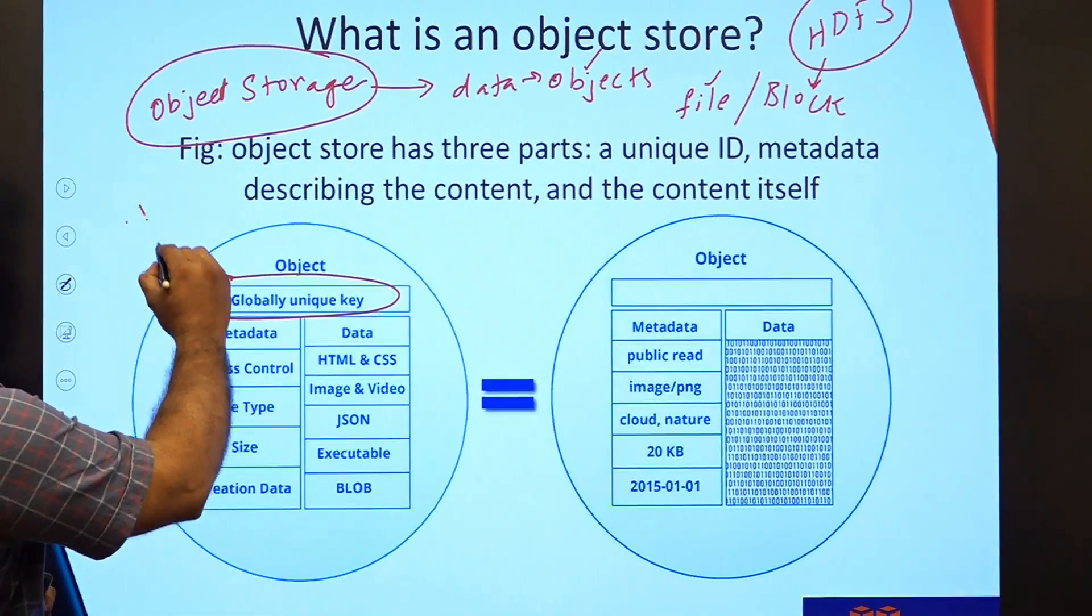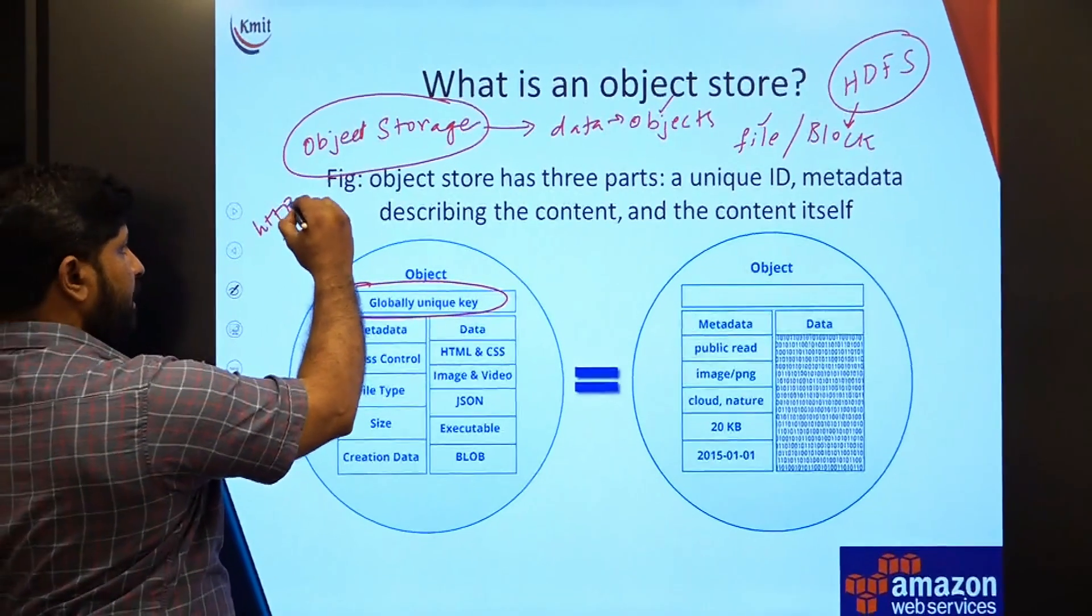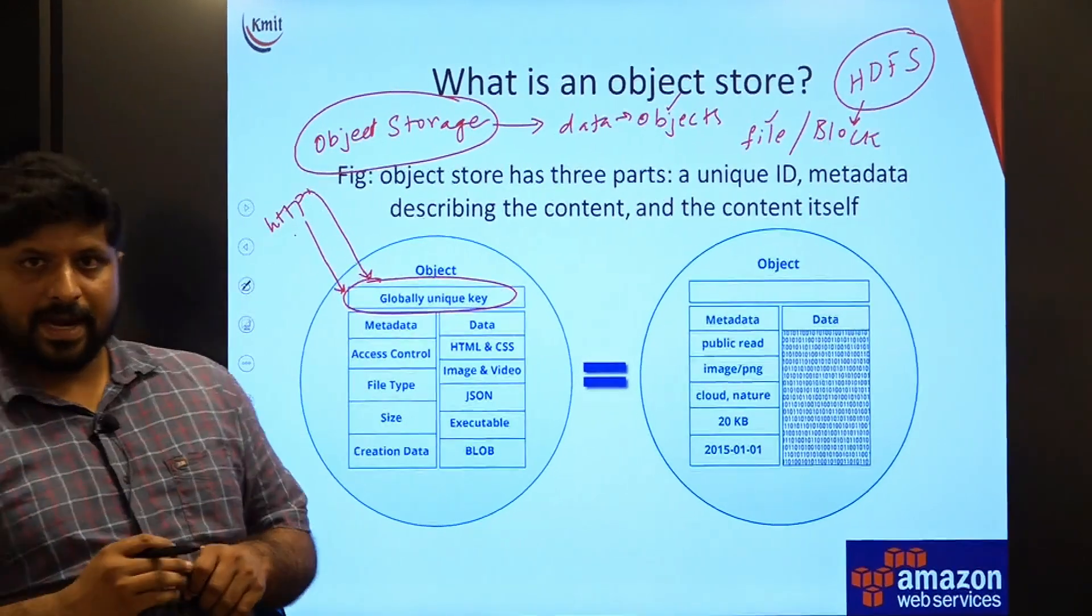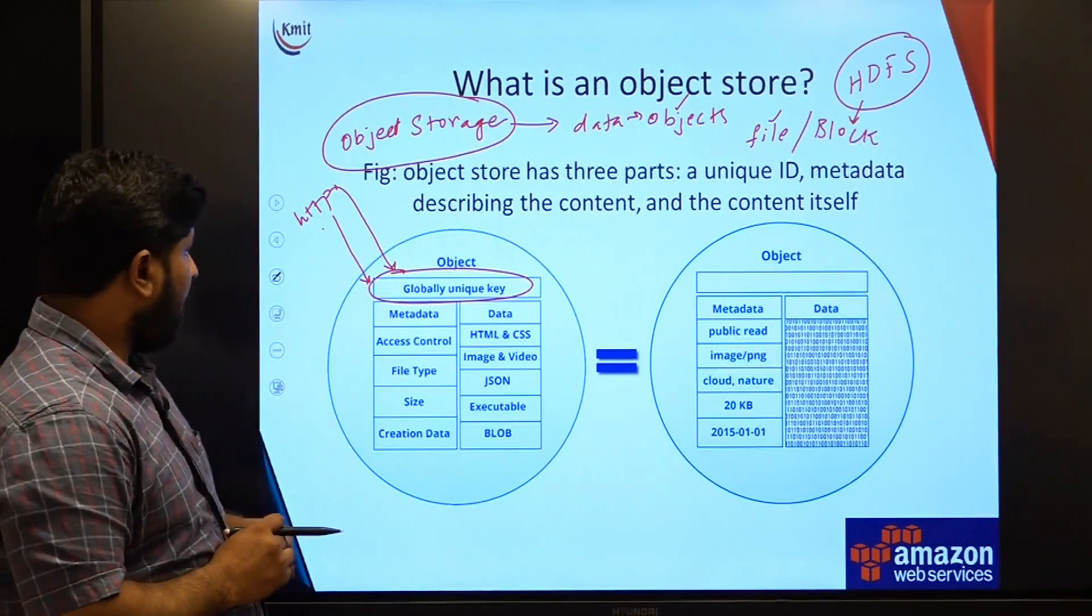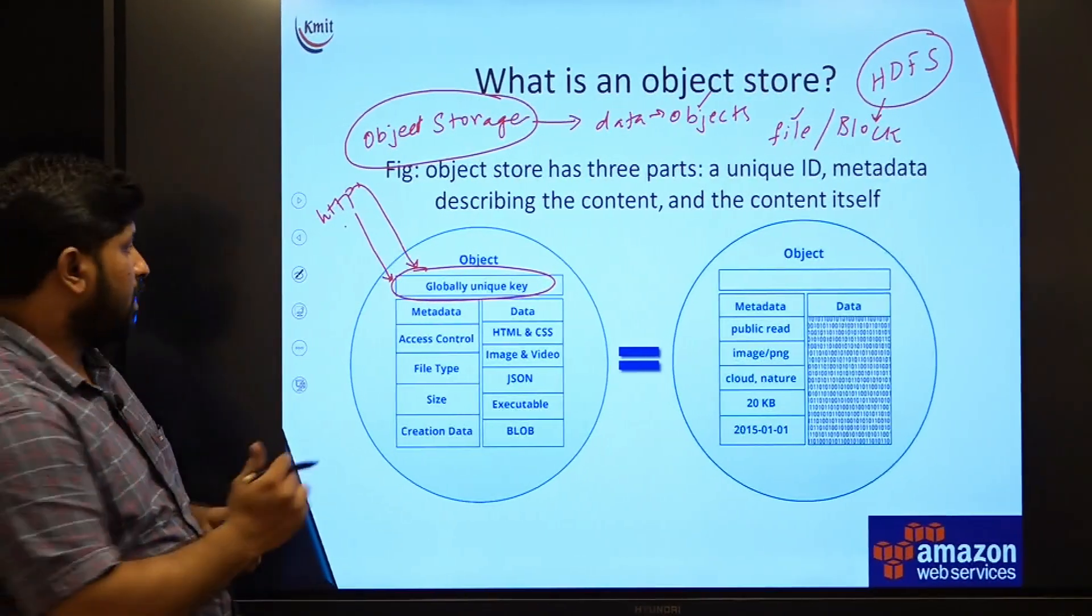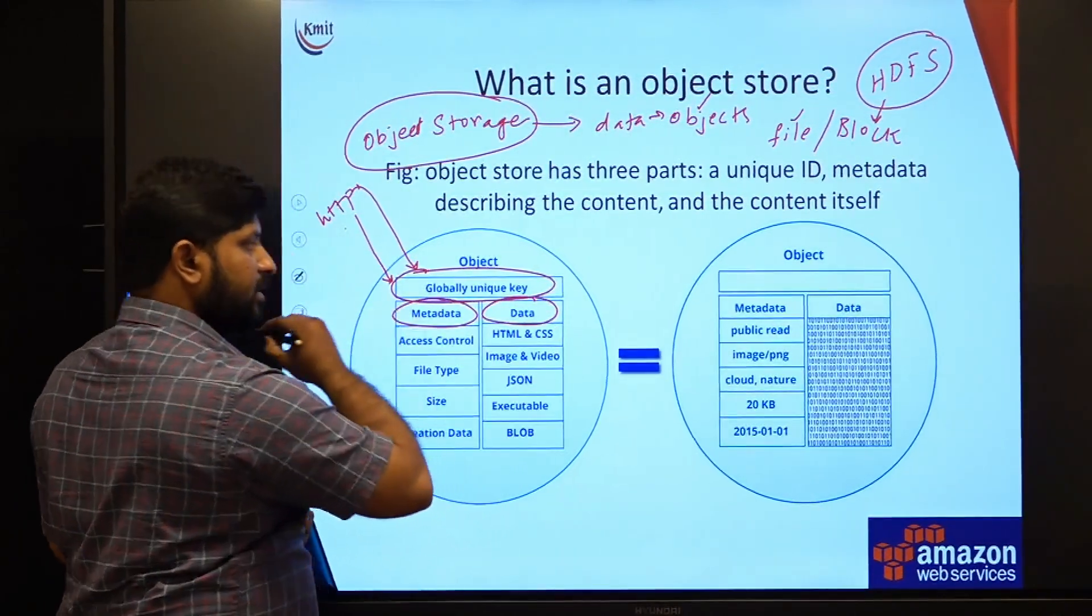Any user who wants to access this object can access this through HTTP using the globally unique identifier. What does this globally unique identifier contain? One, the metadata, and second one is the data.